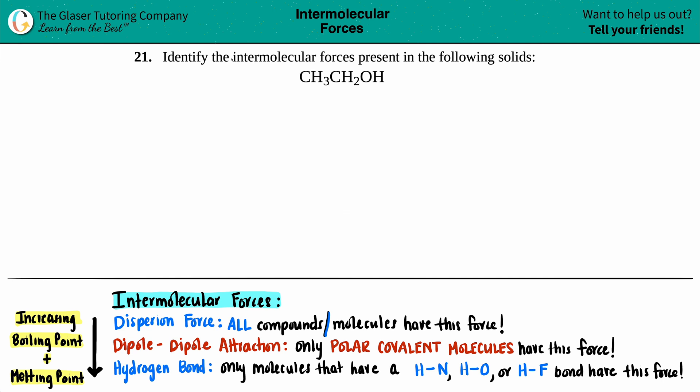Number 21: Identify the intermolecular forces present in the following solids, and we have ethanol, which is CH3CH2OH. Now this compound is what people over 21 in the United States are allowed to drink - could be different elsewhere, but over 21 in the United States you are allowed to drink this compound. How fun is that!